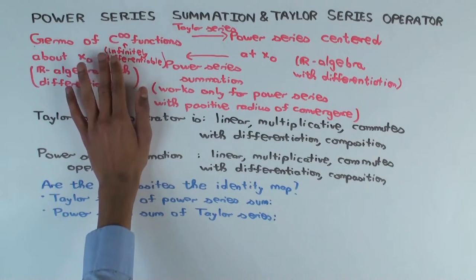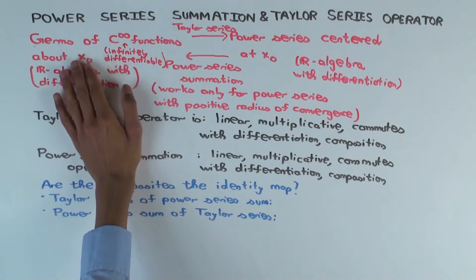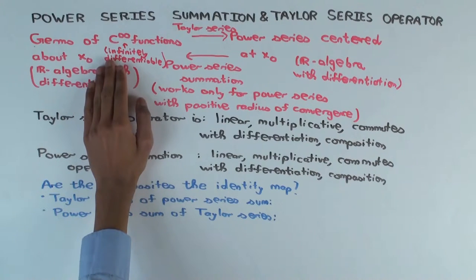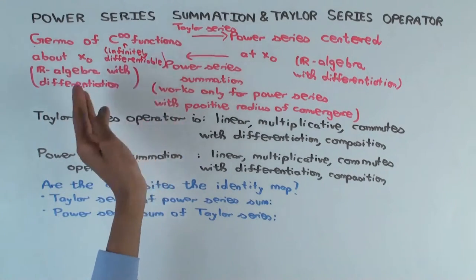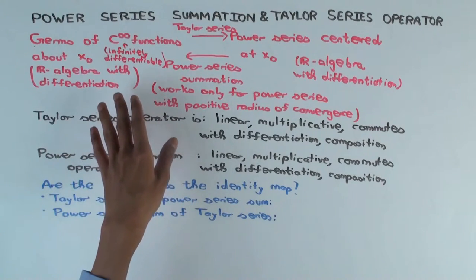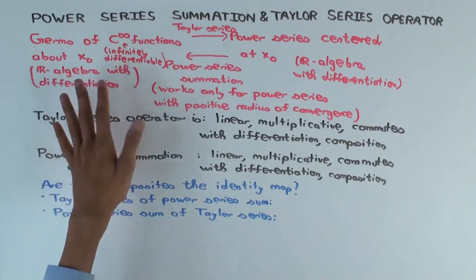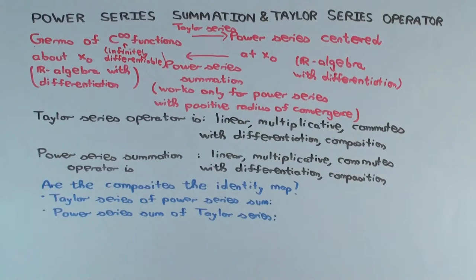The idea is simple: you can compose C∞ functions, but you have to be careful because when you compose, the center could change. When you do F compose G, that makes sense only if F is defined at G(x₀) rather than at x₀. So the composition operation is there, but the center moves when you compose. Similarly, there's a composition operation on power series with a similar flavor.